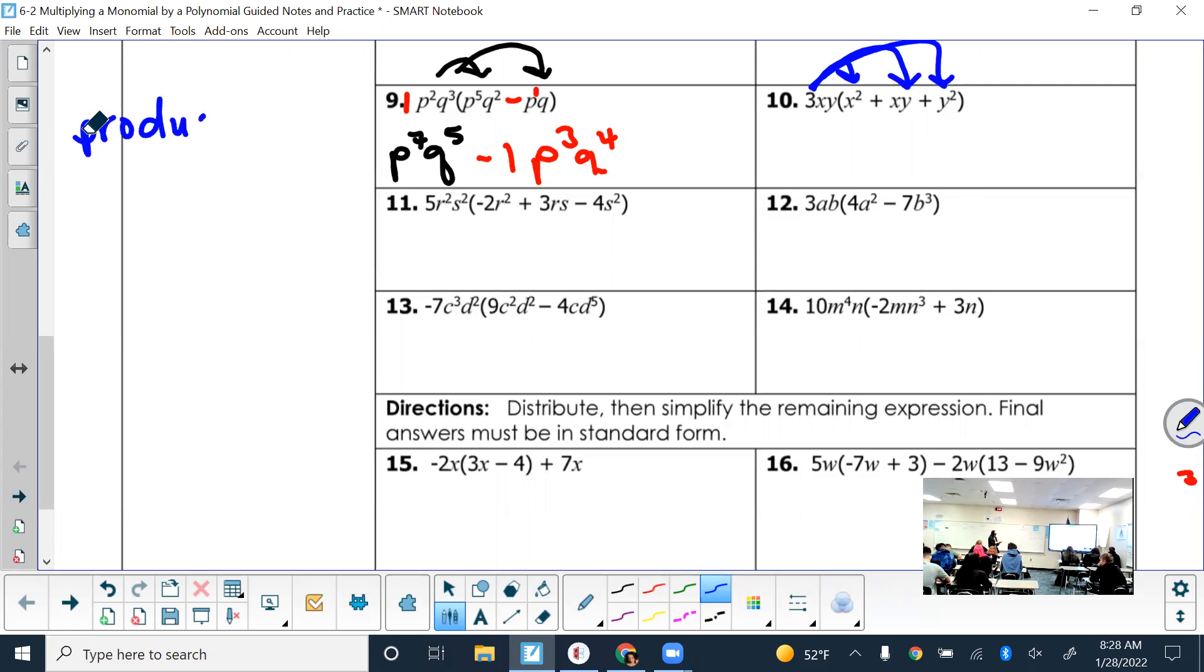The outside term needs to be multiplied by all the inside terms. The coefficients and numbers in front of the variable just multiply them like normal. With the exponents, you need to use that product rule that we talked about. If you have x to the a times x to the b, then what do we do with the exponents? You add them.